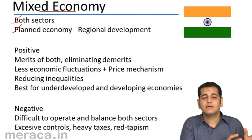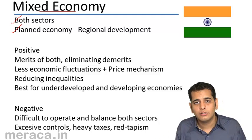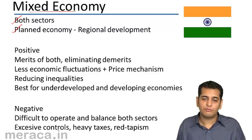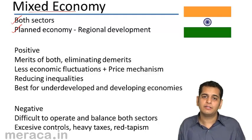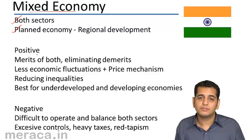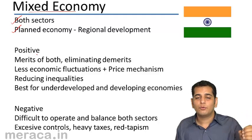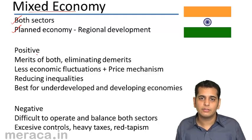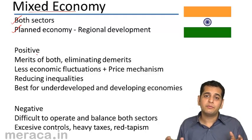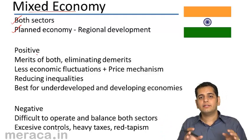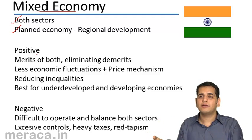The government determines which sectors are to be entrusted to private parties or capitalists, and which sectors are important for the nation and should be handled by the government. The areas where the government thinks development is required — whether geographical or sectoral areas — are given focus. Thus, a mixed economy is a planned economy.